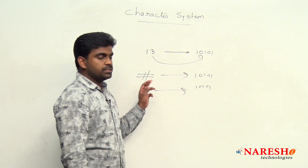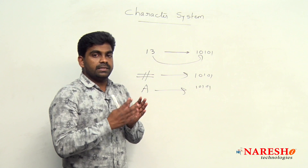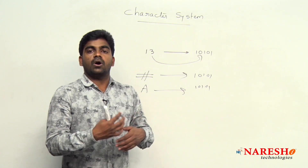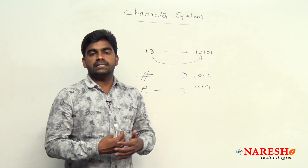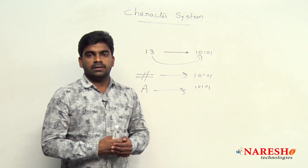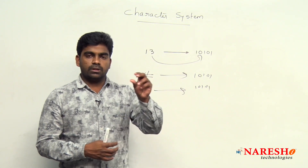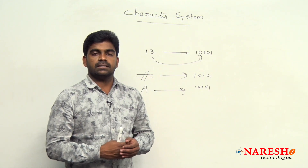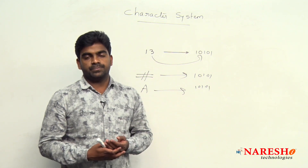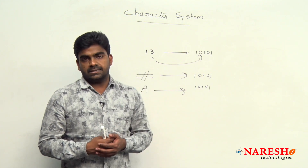How are we converting? For every symbol, there is a corresponding constant integer value. The representation of all the symbols using constants is nothing but character system. We will see the ASCII character set.